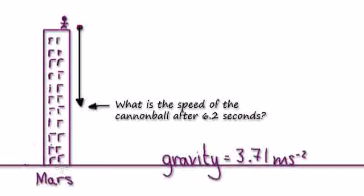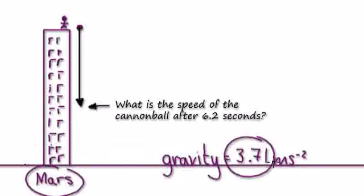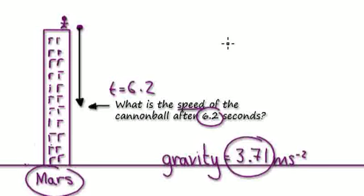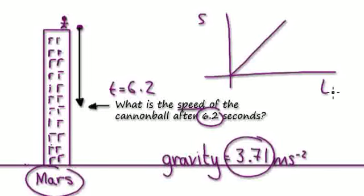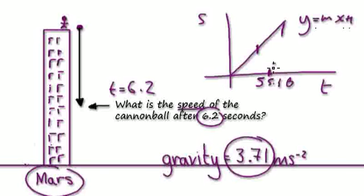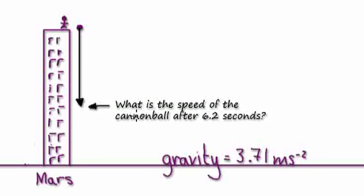Next question. You are now on Mars. The gravitational pull on Mars is 3.71. I want to know the speed — what is the speed of the cannonball after 6.2 seconds? When you have your speed-time graph, it doesn't matter if the time isn't a whole number. Once you've got your equation y equals mx plus c, you can just put it into x and find the speed. Find out the speed of the cannonball after 6.2 seconds on Mars.